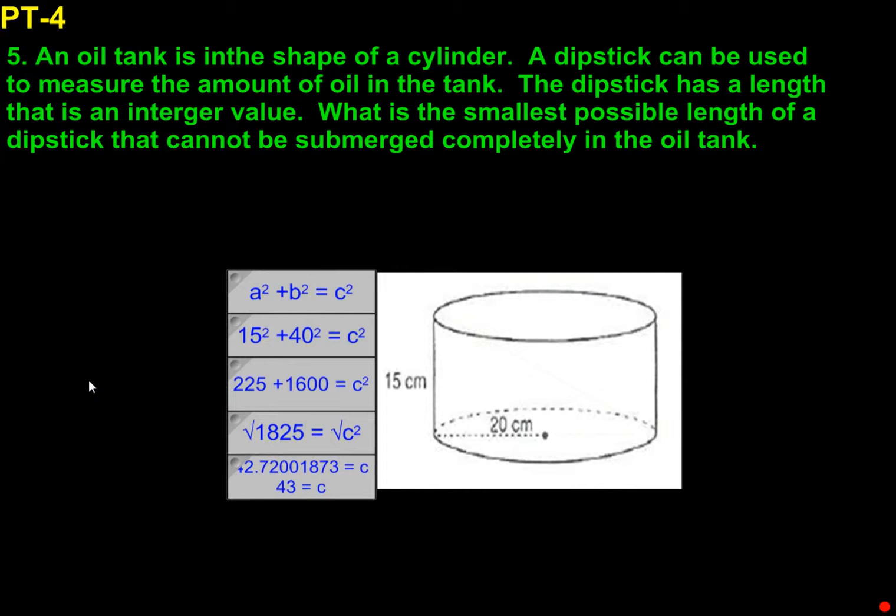Lastly, we'll take a look at question five. An oil tank in the shape of a cylinder. A dipstick can be used to measure the amount of oil in the tank. The dipstick has a length that is an integer value, so we know we're going to have to round when we find it.